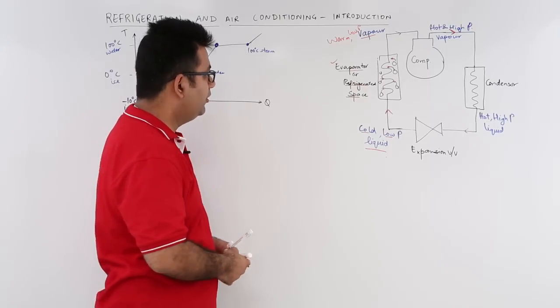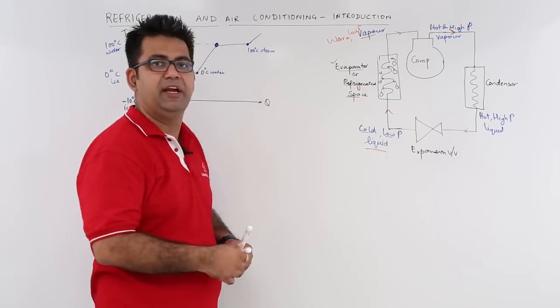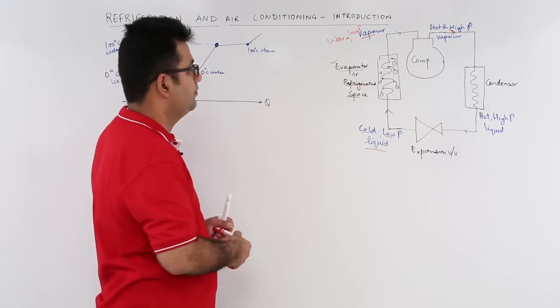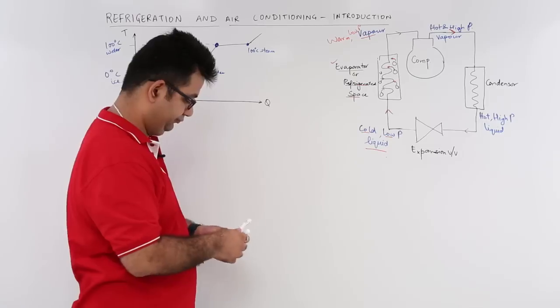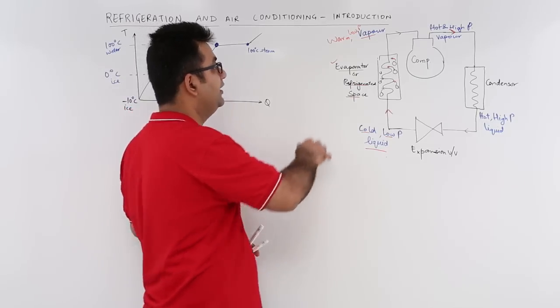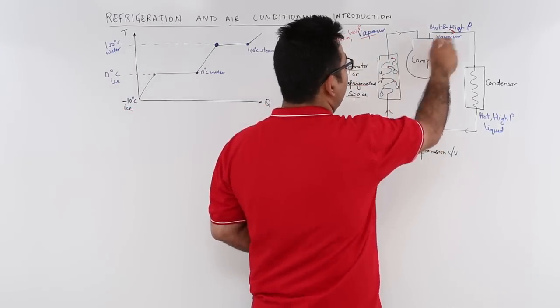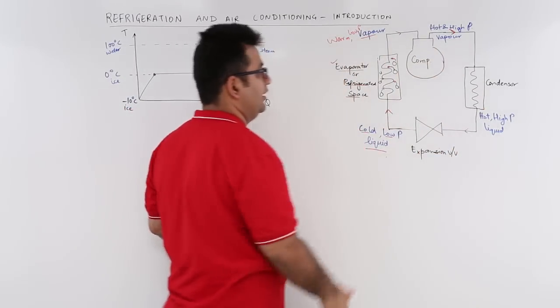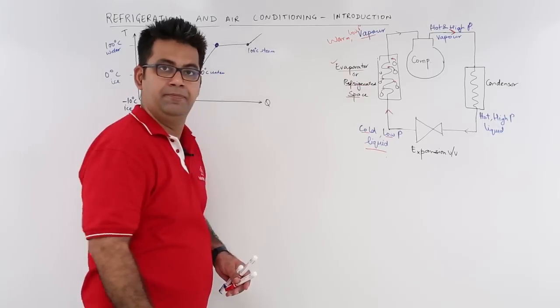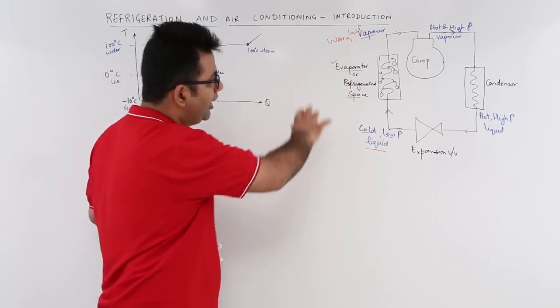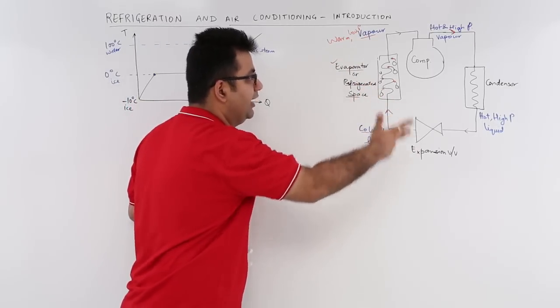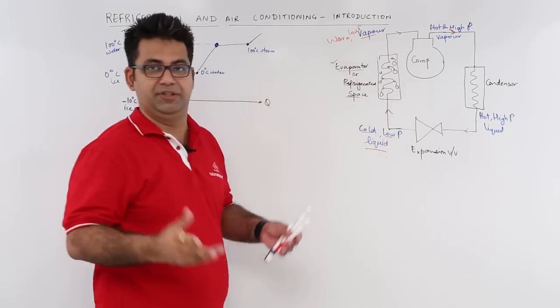Warm, because some heat will be taken up by this vapor. And this enters the compressor and the rest is history. This is how this cycle actually works.